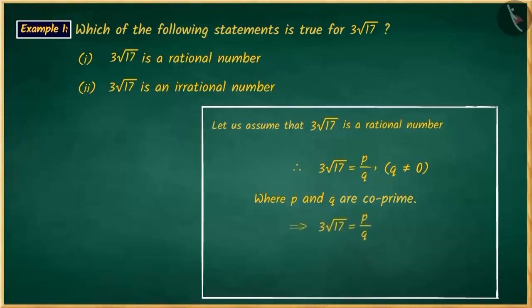If we rearrange this, we will get square root of 17 is equal to p upon 3q.